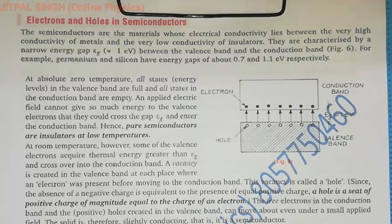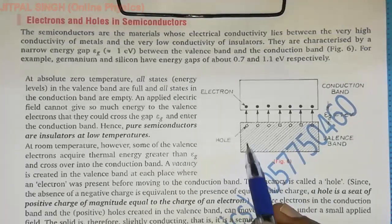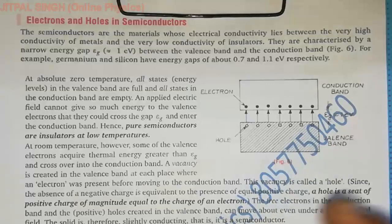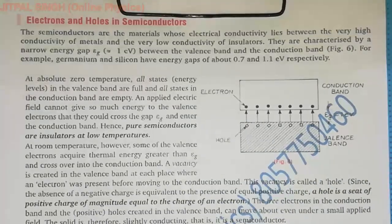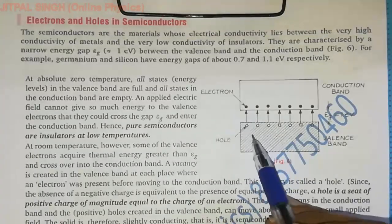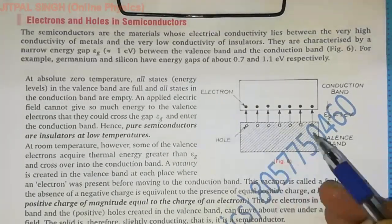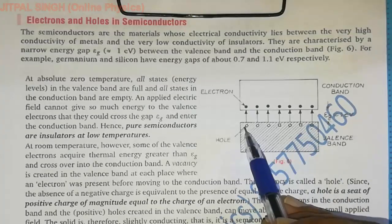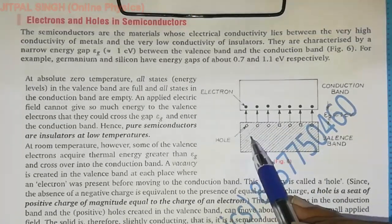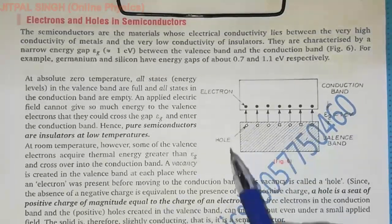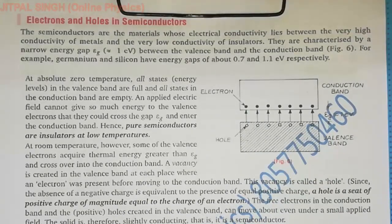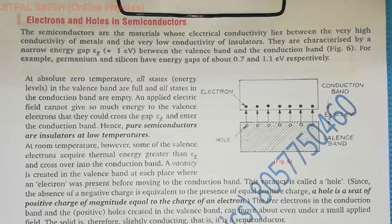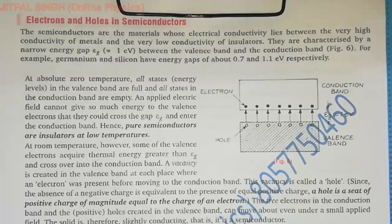When an electron shifts from the valence band to the conduction band, remember that the valence band consists of a large number of covalent bonds. A covalent bond breaks and one electron shifts from the valence band to the conduction band. As seen in the figure, seven covalent bonds break and seven electrons shift. Only those covalent bonds break whose atoms receive energy equal to 1.1 eV in the case of silicon and 0.7 eV in the case of germanium.